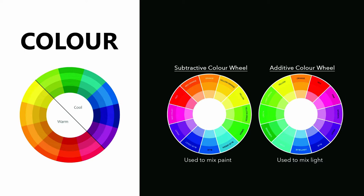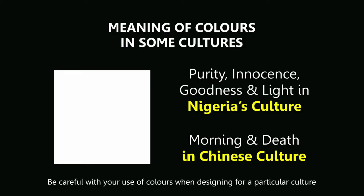Let's look at some meanings of colors in different cultures. What does white symbolize in your culture? It means purity, innocence, goodness, and light — it has a positive connotation. But did you know that white is associated with mourning and death in Chinese culture? That's why white is worn at Chinese funerals.